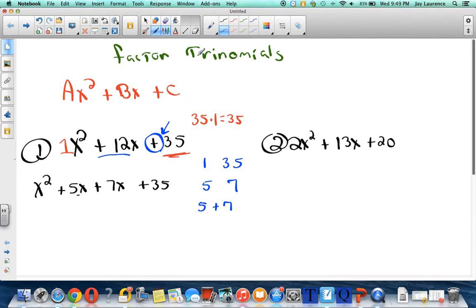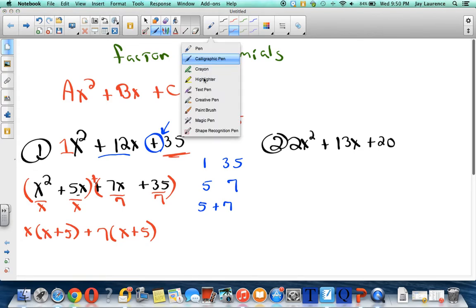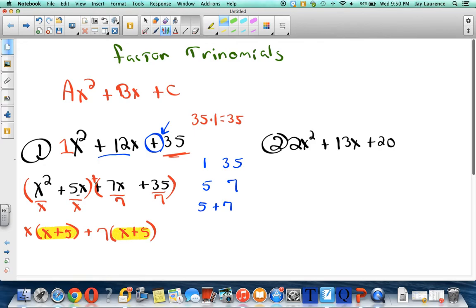So now I have a four-term polynomial and I can group. I'll group these two, I'll group these two, put a plus in between. So my GCF of the first quantity is x. And so I'll have x times the quantity of x + 5 plus. GCF of the second two is 7, and so I will have 7 times the quantity of x + 5.